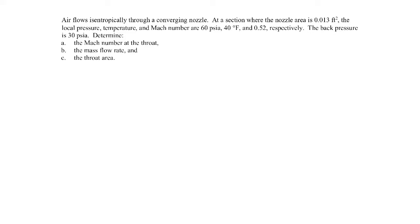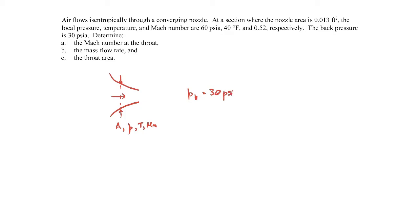In this example, we have air flowing isentropically through a converging nozzle. At a section where the nozzle area is 0.013 square feet, the local pressure, temperature, and Mach number are given. We're also told that the back pressure at the exit is 30 psia. We're asked to determine the Mach number at the throat, the mass flow rate, and the throat area.